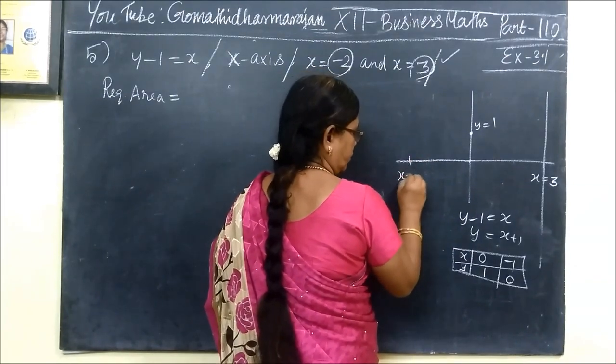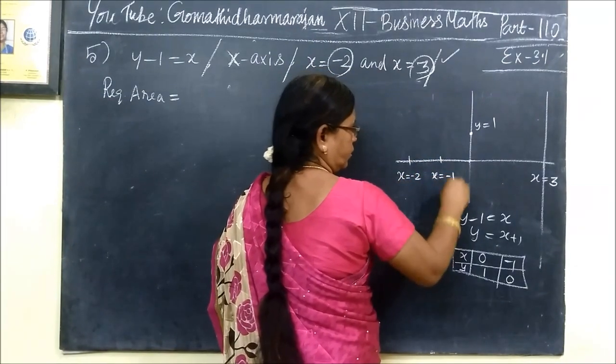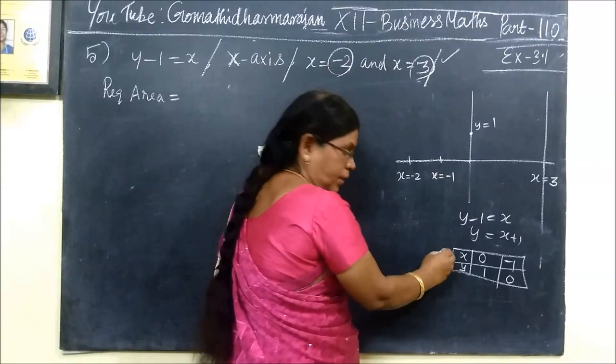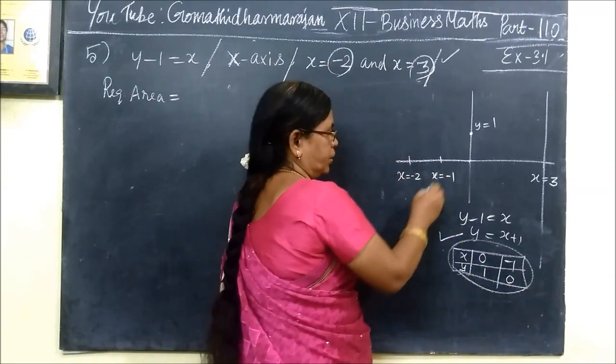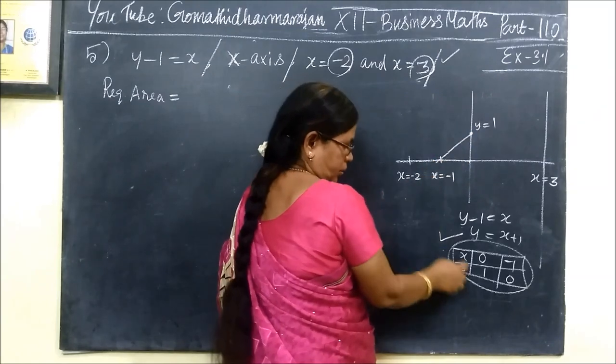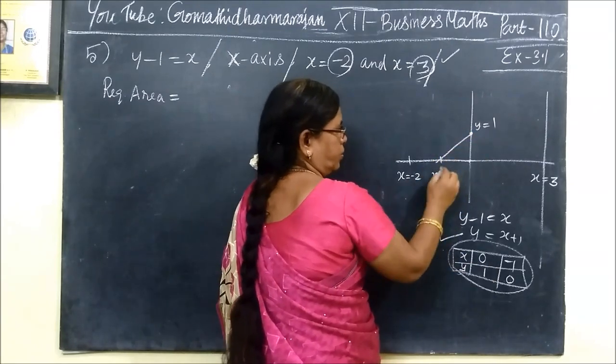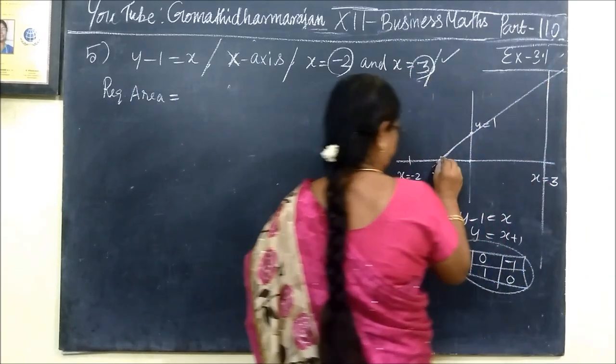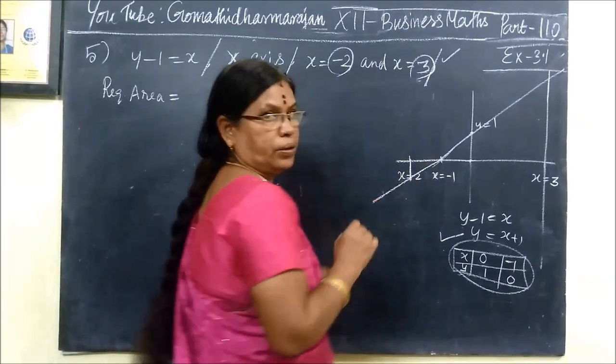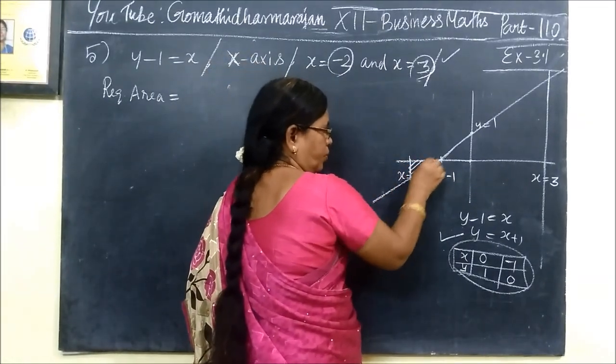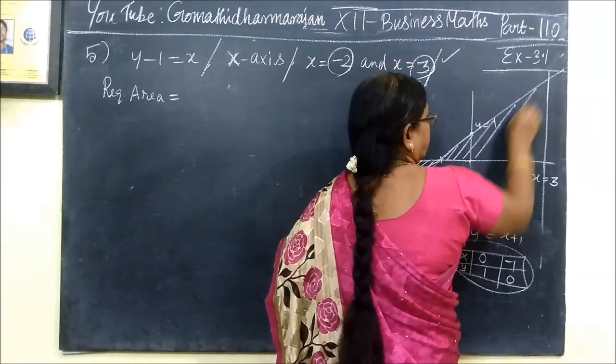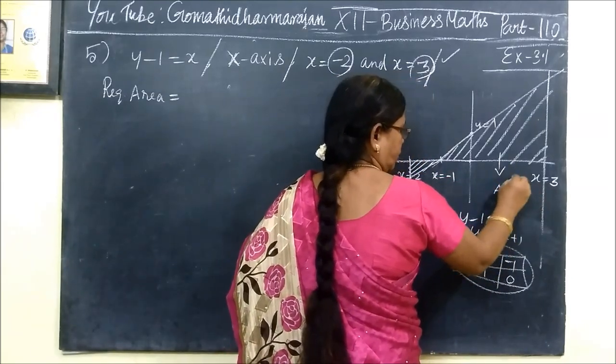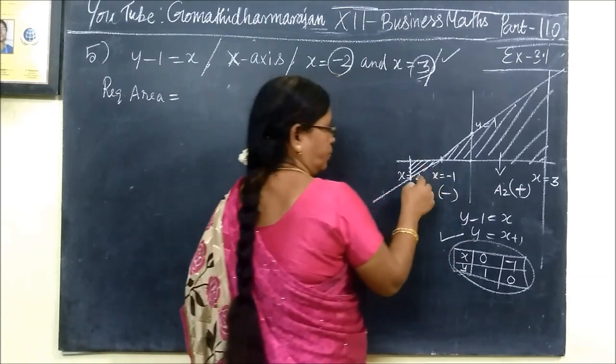x equals minus 1, y equals 0. This is the result of the equation. When we see the result, the element gives the regions. This is A2 plus A1 minus. This is below.